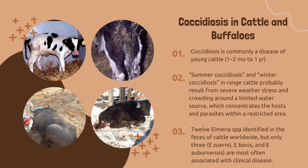Now let's proceed to the second part: coccidiosis in cattle and buffaloes. Coccidiosis is commonly a disease of young cattle, one to two months to one year old, and is usually sporadic during wet seasons. Summer and winter coccidiosis in range cattle probably result from severe weather stress and crowding around a limited water source, which concentrates the host and parasites within a restricted area. Twelve Eimeria species have been identified in the feces of cattle worldwide.